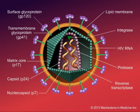There is a lipid membrane, and from that lipid membrane, you can see that the spikes protrude outward. These include the surface glycoprotein, which is GP120, as well as a transmembrane glycoprotein that is termed GP41. The matrix core, the capsid protein, and the nucleocapsid protein all underlie the outer layer of the virus.